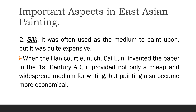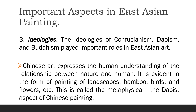When Cai Lun invented paper in the 1st century AD, it provided not only a cheap and widespread medium for writing, but painting also became more economical. Number 3: Ideologies — the ideologies of Confucianism, Taoism, and Buddhism played important roles in East Asian arts. Chinese art expresses the human understanding of the relationship between nature and humans, evident in the form of painting landscapes, bamboo, birds, and flowers. This is called the metaphysical and Taoist aspect of Chinese painting.